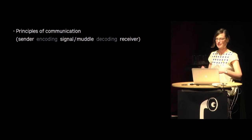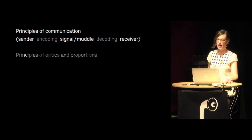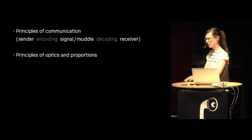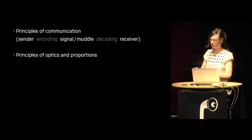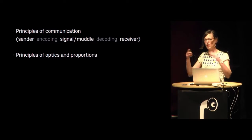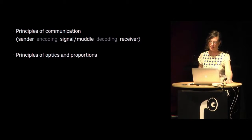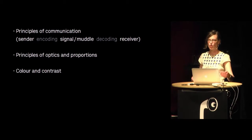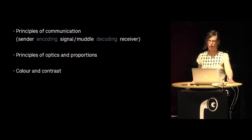There's the principle that everyone has heard about: you send a message, that's the signal, and if you encode it the right way the other end can decode it and gets what you want to say. Then there are principles of optics and proportions — heavy things on top look like they fall down, so don't put a heavy dark image on top if you want tiny text below. Then there's color theory and contrast. These are principles communication designers learn in school and apply — but these are not strict rules. They are best practices or guides.